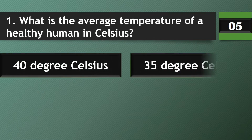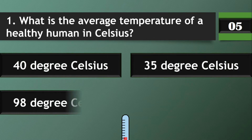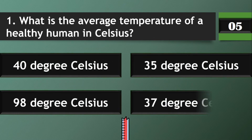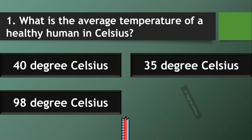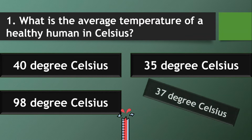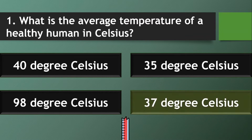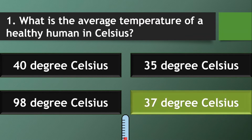Question 1: What is the average temperature of a healthy human in Celsius? Answer: 37 degrees Celsius.